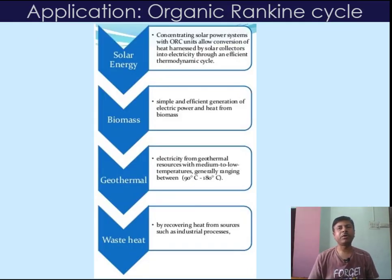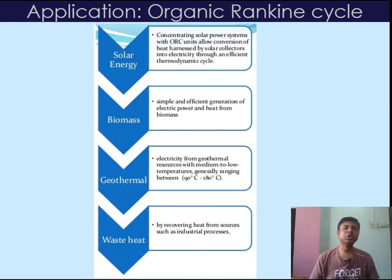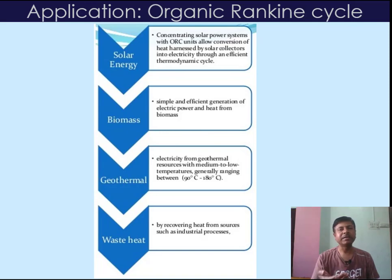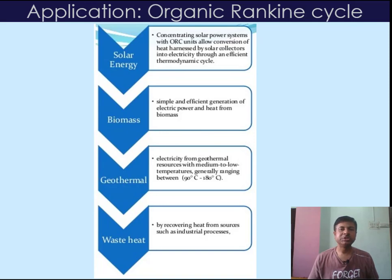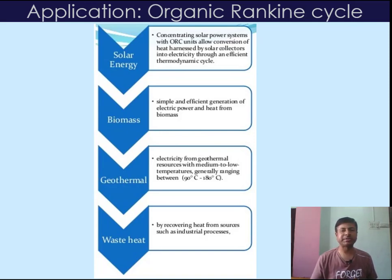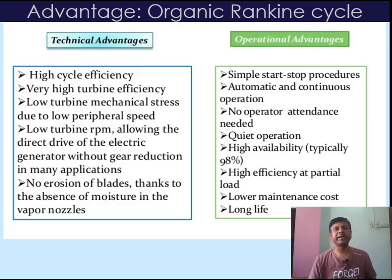Coming to the applications of Organic Rankine Cycle: for solar energy, concentrating solar power systems with ORC units allow conversion of heat harnessed by solar collectors into electricity through an efficient thermodynamic cycle. In biomass, it enables simple and efficient generation of electric power and heat. In the geothermal sector, electricity is generated from geothermal resources with medium to low temperatures, generally ranging between 90°C to 180°C. In waste heat recovery systems, heat is recovered from sources such as industrial processes.